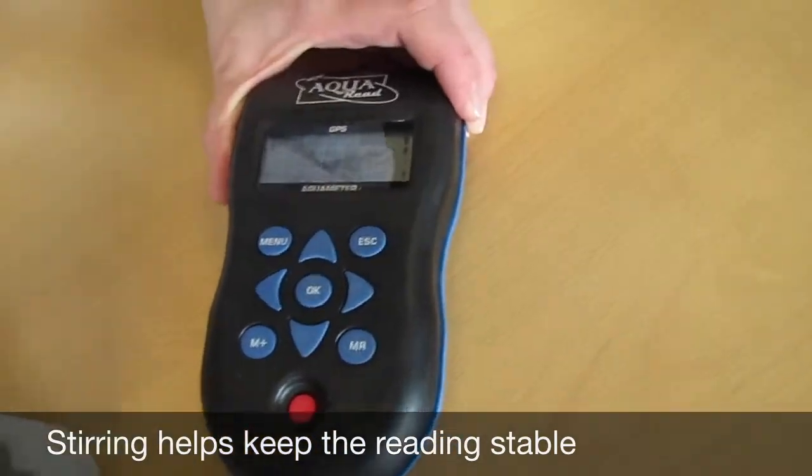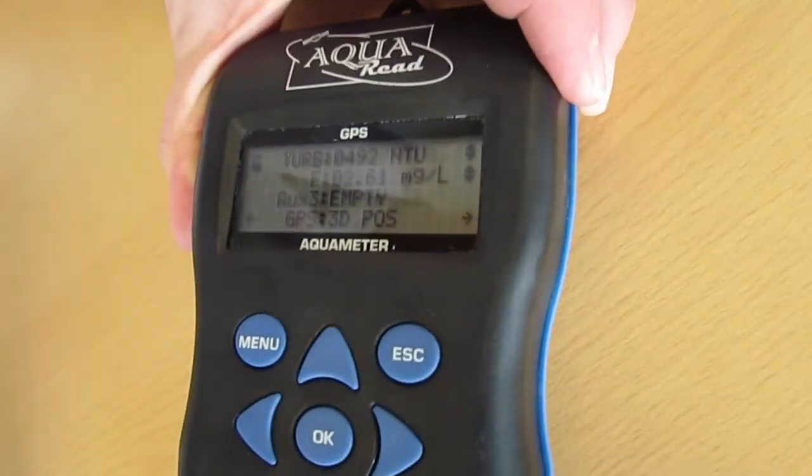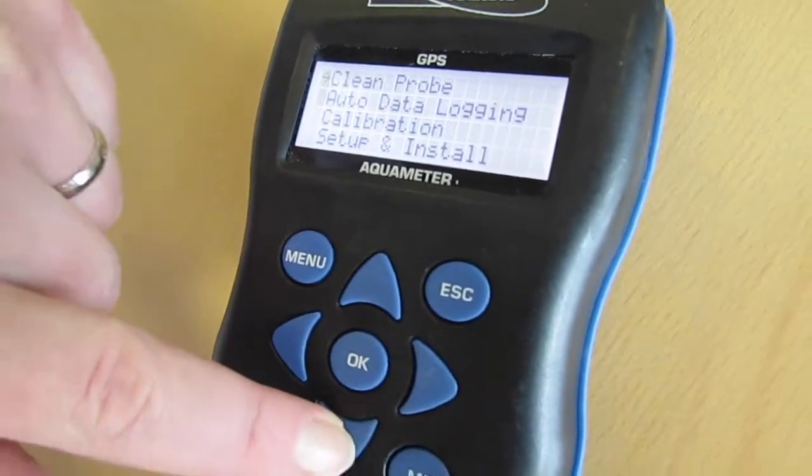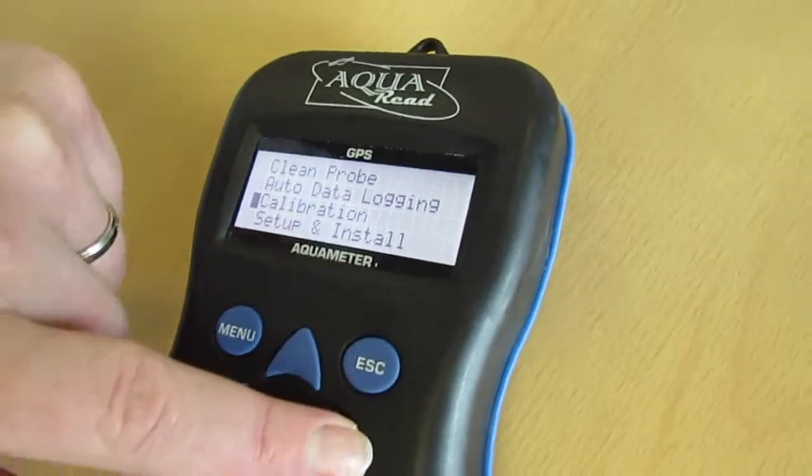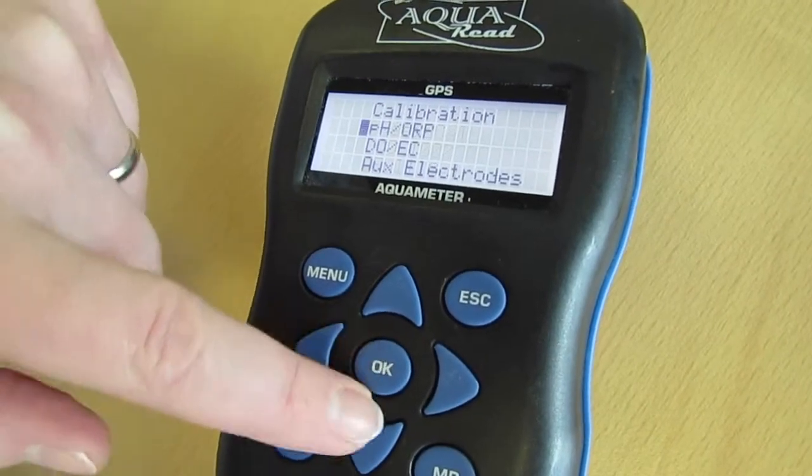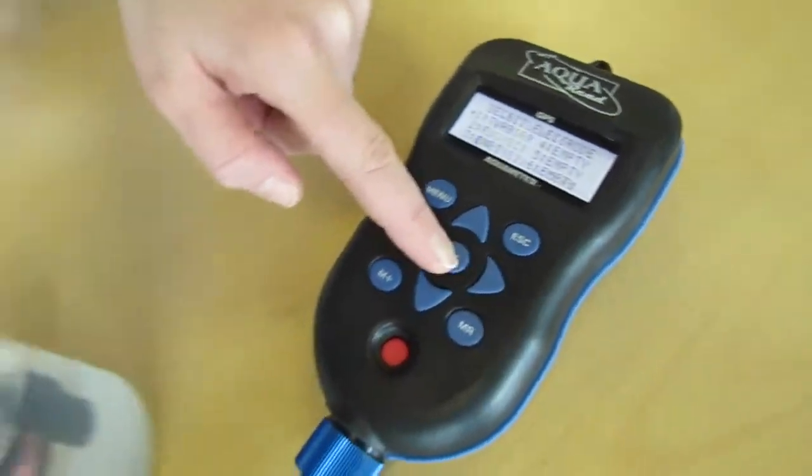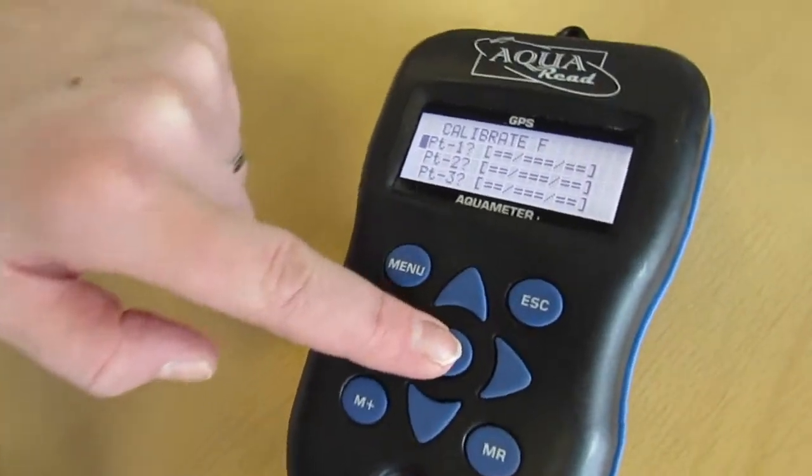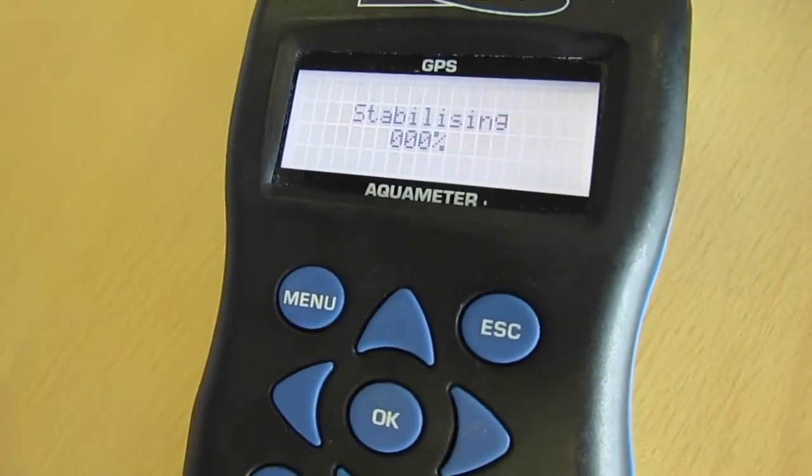When the ISE reading has stabilized whilst stirring we can then calibrate 0.1. So we go into calibration, full cal, aux electrodes, select fluoride and 0.1.